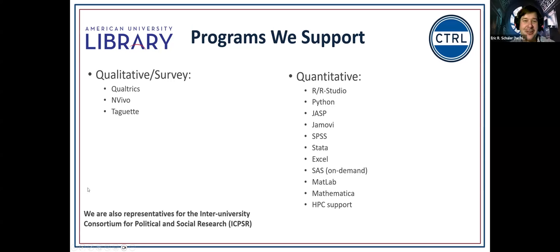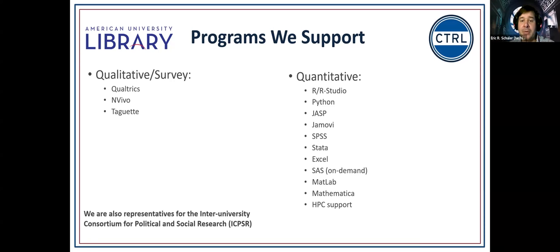For quantitative programs, I provide support for R/RStudio, Python, JASP, and Jamovi — I put those at the top because I'm a huge proponent of open source. All my trainings use open source statistical programs. I also support SPSS, Stata, Excel, and SAS on Demand — we no longer have a campus-wide SAS license, but SAS on Demand is available and I have videos on getting started. MATLAB can be installed on any personal or work computer as well.